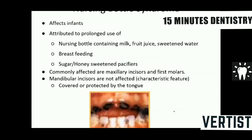A special type of rampant caries is nursing bottle syndrome, affecting infants and attributed to prolonged use of a nursing bottle and breastfeeding especially at night. The commonly affected teeth are the maxillary incisors and first molars. A very peculiar feature is that the mandibular incisors are not affected because they are covered and protected by the tongue. Parents of such children must be counseled on proper hygienic measures after feeding.